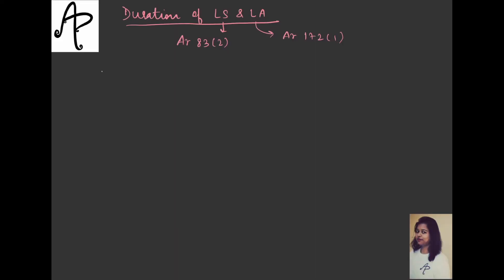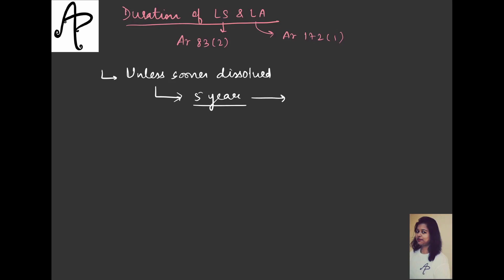So the first point is 'unless sooner dissolved' - which means there is a provision of sooner dissolution also. But if not dissolved earlier, the term is five years. For Rajya Sabha and Legislative Council it was six years, but here the term is five years, and once it is completed, it will be considered as dissolution.